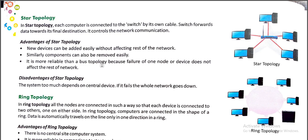Advantages of star topology: a new device can be added easily without affecting the rest of the network, and components can also be removed easily. It is more reliable than bus topology because failure of one node does not affect the rest of the network. Disadvantage: the system depends too much on the central device — if it fails, the whole network goes down. Everything depends on the central computer, and if that fails, the whole topology fails.